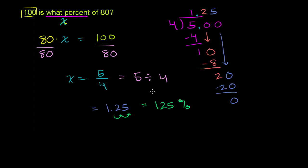And that makes complete sense. 100 is 125% of 80. 80 is 100% of 80. 100 is more than 80. It's actually 1 and 1 fourth of 80. And you see that right over there. So it makes sense that it's 125%. It's more than 100%. But we are done. We've solved the problem. It is 125% of 80.